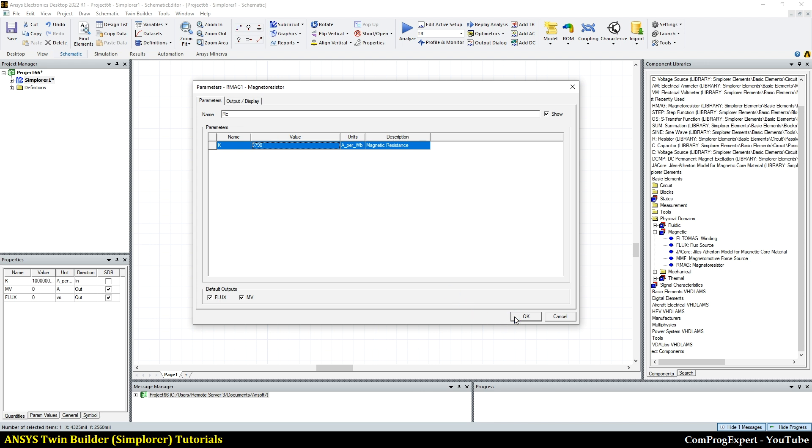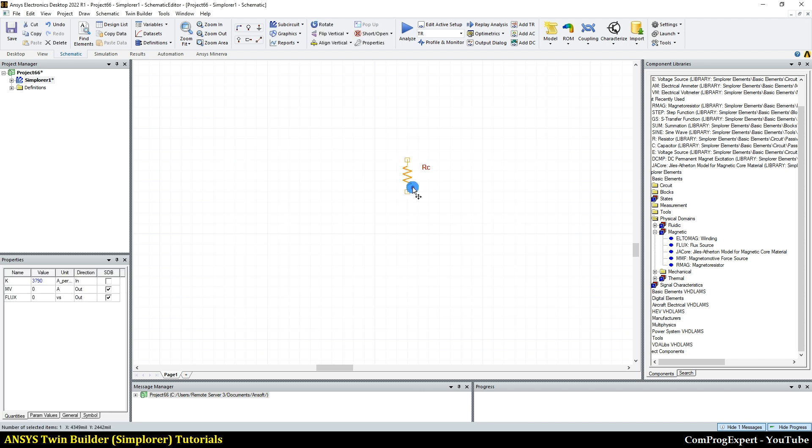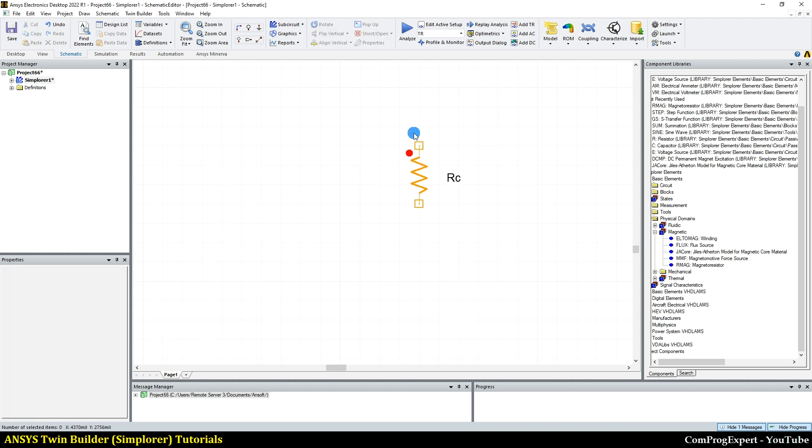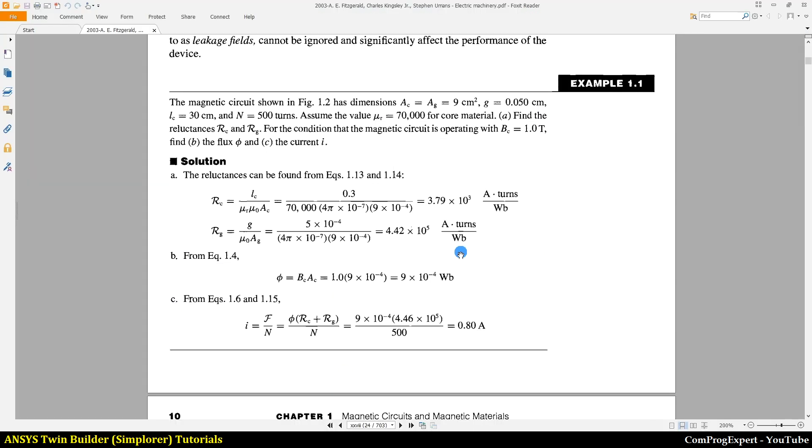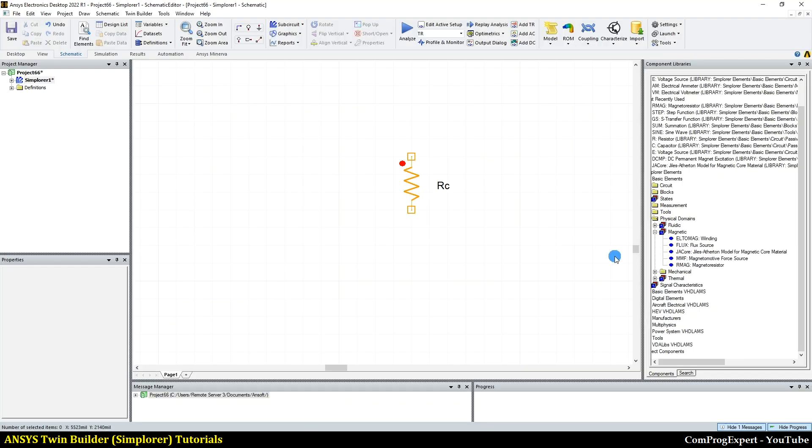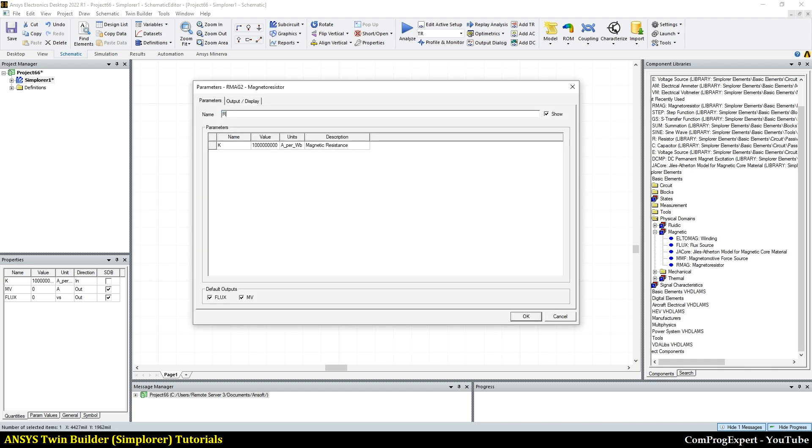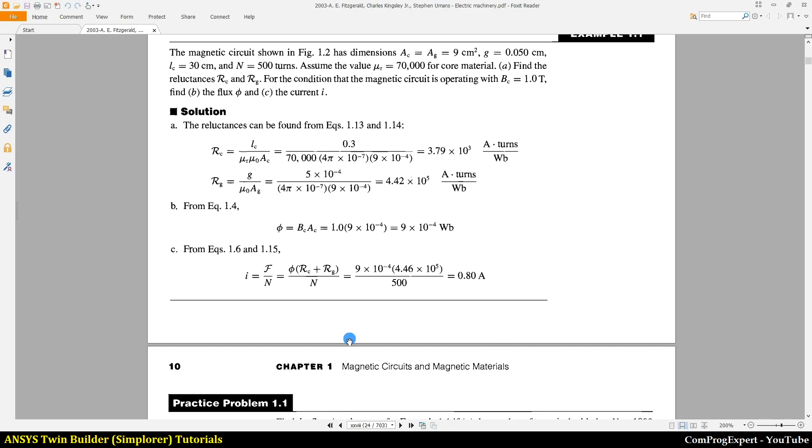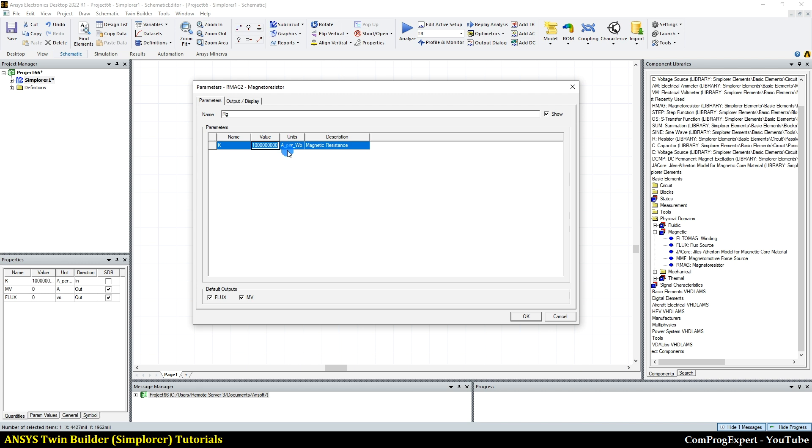This is the value of the core reluctance. Let me rotate this object and consider the correct direction of the dot sign. And here is the reluctance of the air gap. So I need another reluctance, the air gap. Let's change the name to RG. What is the value of the reluctance? 4.42 times 10 to the power five, E5.